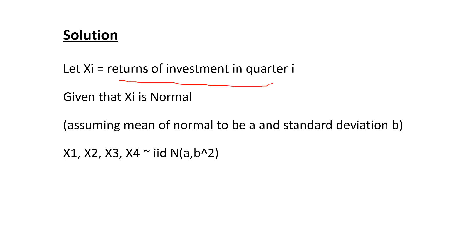Let Xi be the returns of the investment in quarter i. We are given that Xi is normal but we are not given the parameters of this distribution. We are told that the distributions are identical and independent, so there is no covariance and the parameters are the same for each quarter. Let's assume the mean is A and the standard deviation is B. So X1, X2, X3, and X4 are the returns of quarters 1, 2, 3, and 4 respectively, distributed normally with mean A and variance B squared.